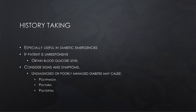Consider the patient's signs, symptoms, and pertinent negatives. If the patient is unresponsive, obtain a blood glucose level and manage any abnormalities. Use the SAMPLE history — Signs/Symptoms, Allergies, Medications, Past medical history, Last oral intake, and Events leading up to — to gather information systematically. Signs and symptoms of endocrine disorders in patients with undiagnosed or poorly managed diabetes include polyphagia, polyuria, and polydipsia.